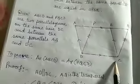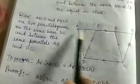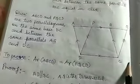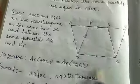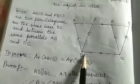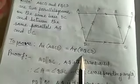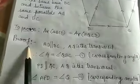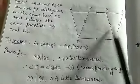The two parallelograms ABCD and PQCD are between the same parallels DC and AQ. We need to prove that the area of parallelogram ABCD and parallelogram PQCD are equal.